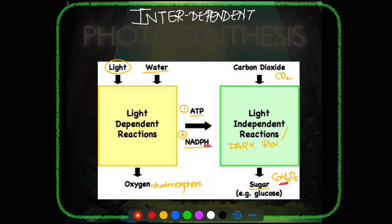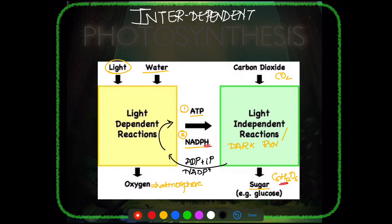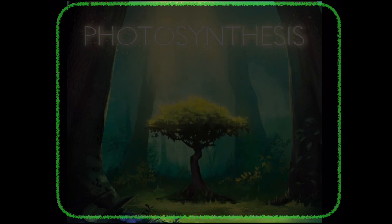ATP is the energy molecule required for any reaction in plant or animal bodies. NADPH acts as the hydrogen donor. Both ATP and NADPH are products of the light reaction used in the dark reaction. After being utilized, they return as ADP + inorganic phosphate (IP) and NADP+, which cycle back into the light reaction to be regenerated, showing how interdependent both reactions are.